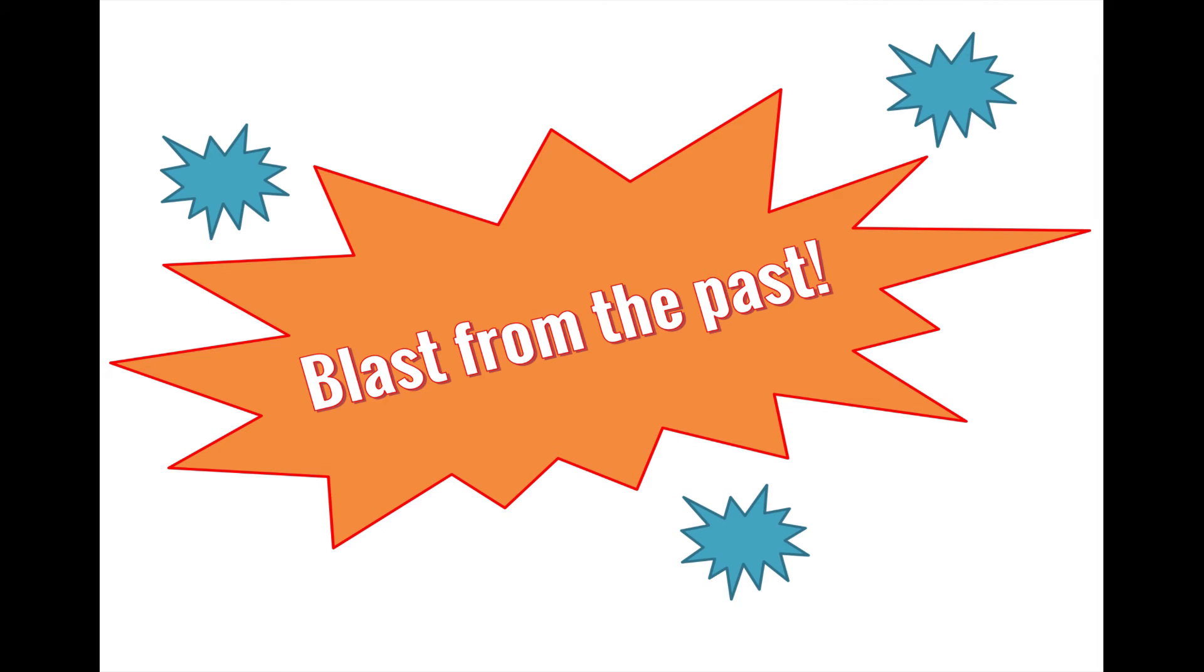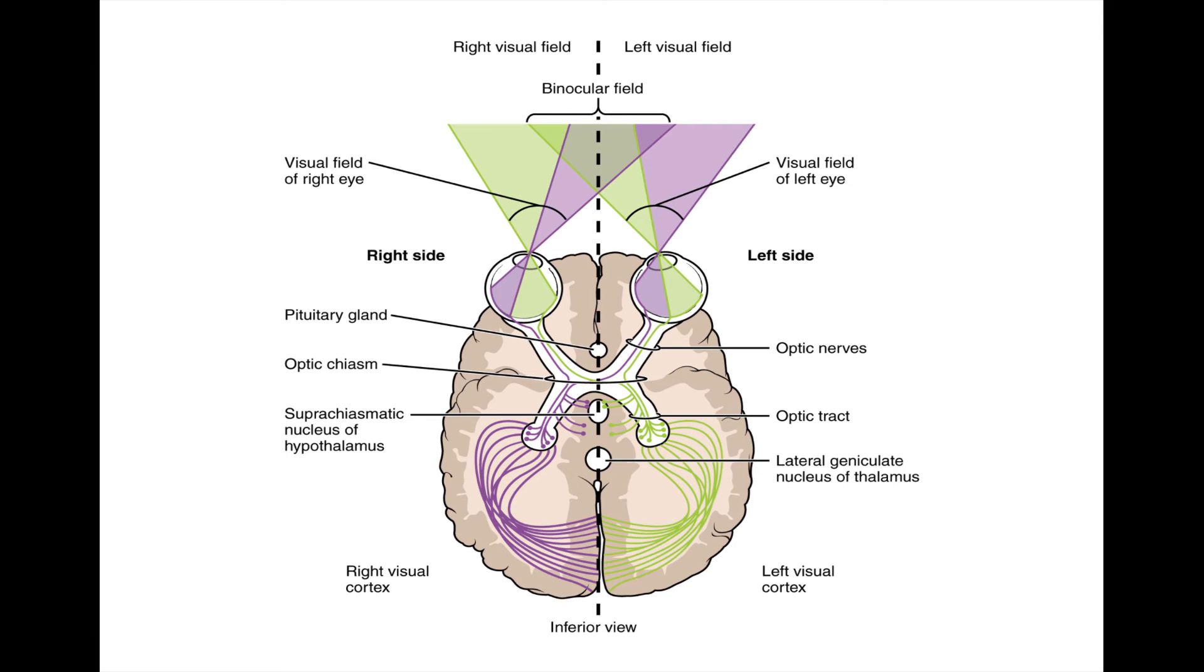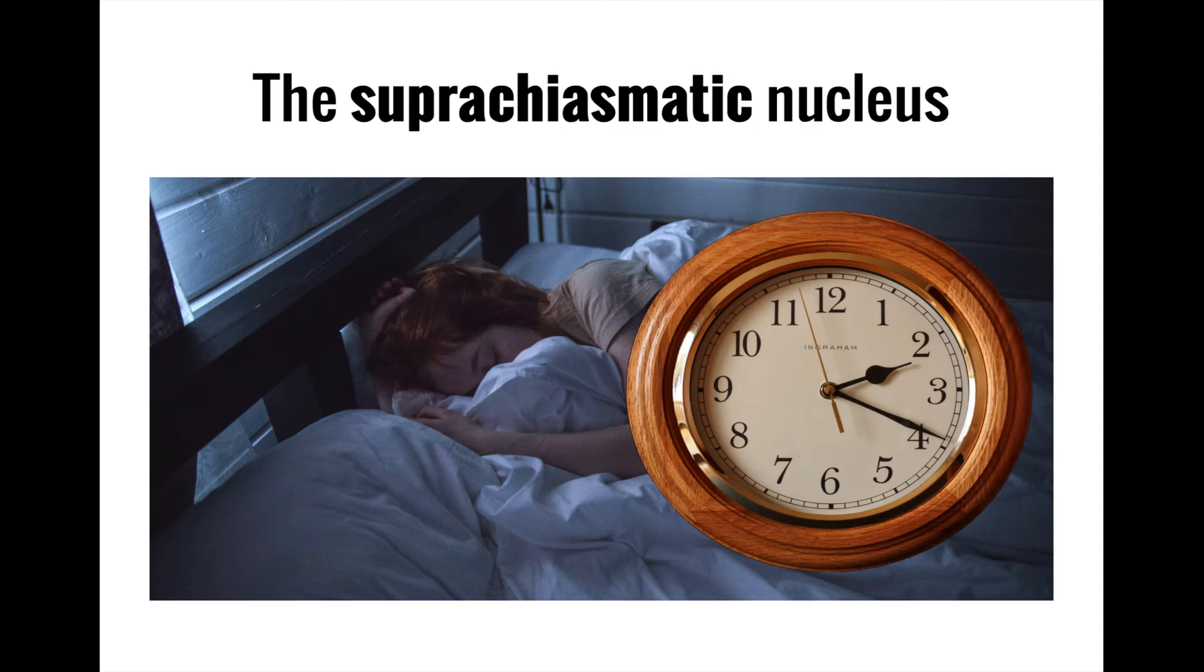Alright, time for another blast from the past. Some visual signals generated in the retina do not travel in the main visual pathway, but instead go to the suprachiasmatic nucleus of the hypothalamus, where they help to regulate the circadian rhythm in response to environmental light, helping you feel sleepy when light levels are low. Remember from a previous video that you need sleep to be chiasmatic.